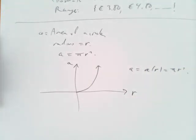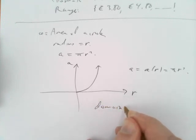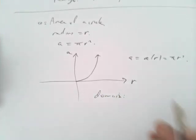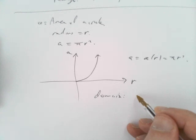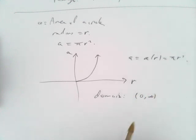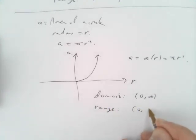In this case, because it has to be an area of a circle, and the circle has to have a radius, the radius can't be negative. It's not a circle if it's zero radius. So the domain is zero to infinity. It has to be a positive radius to be a circle. And then the range is also zero to infinity. It's a positive area.